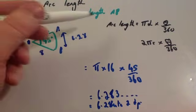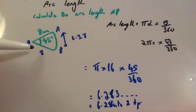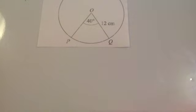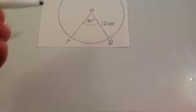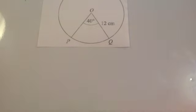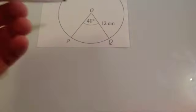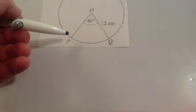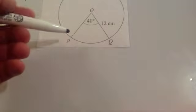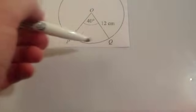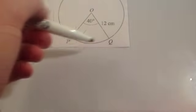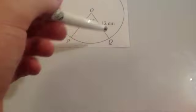But if it asks for the perimeter, you'd add up the three sides. Here's another question: calculate the length of the minor arc PQ.